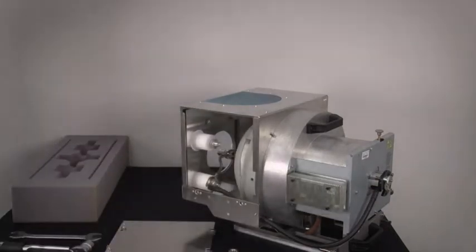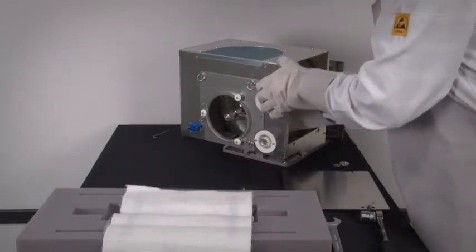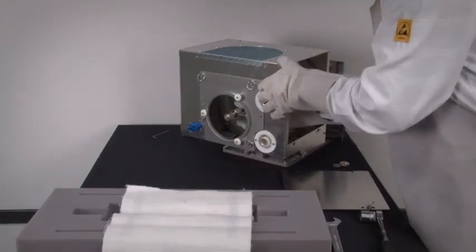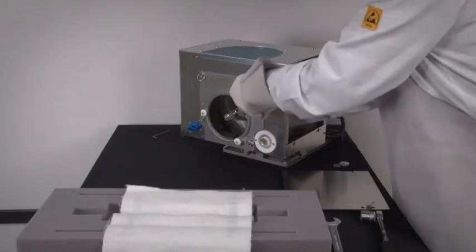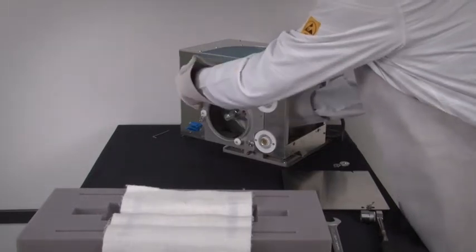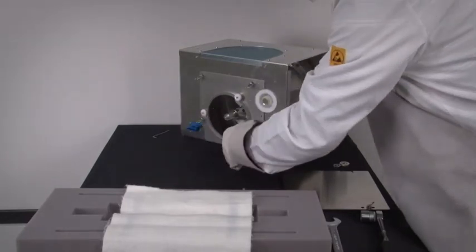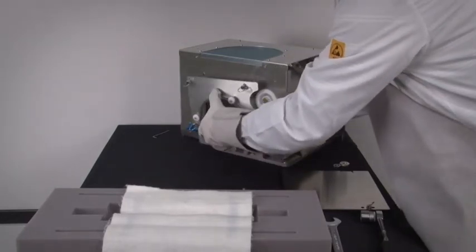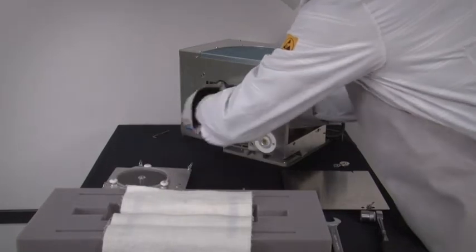Now reach into the projector and support the anode of the lamp by holding the metal anode part of the lamp. This ensures that the lamp doesn't fall out when the UV blocker mounting plate is removed. Remove the UV blocker mounting plate by loosening the four retaining thumb screws. Now pull the UV blocker mounting plate away from the lamp house.